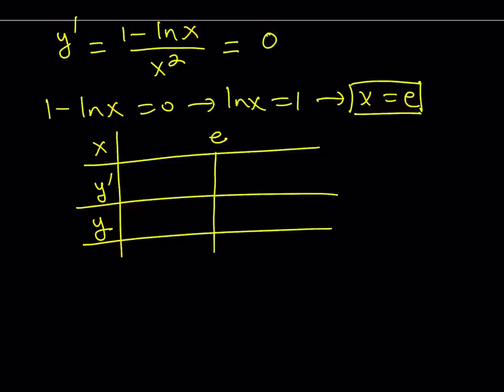From here, 1 minus ln x equals 0 gives us ln x equals 1, and that gives us x equals e as our only critical value. So by using this information, I'm going to be making a table. Let's see what the table looks like. I'm going to have a row for x, row for y prime, and row for y. And the only critical value for the derivative is e. From left to right, the numbers are going to be increasing just like the number line.